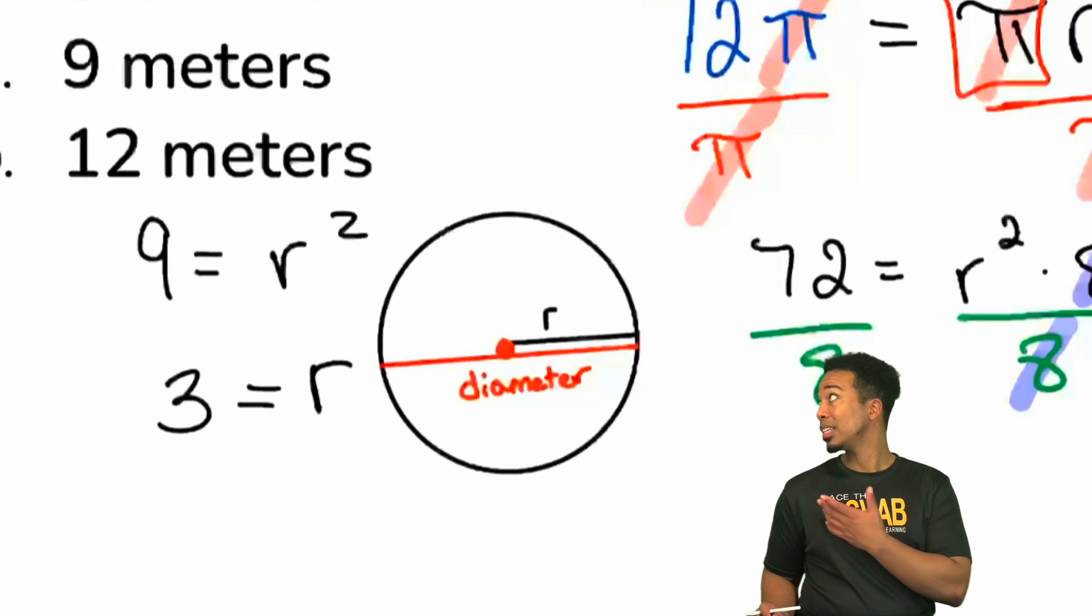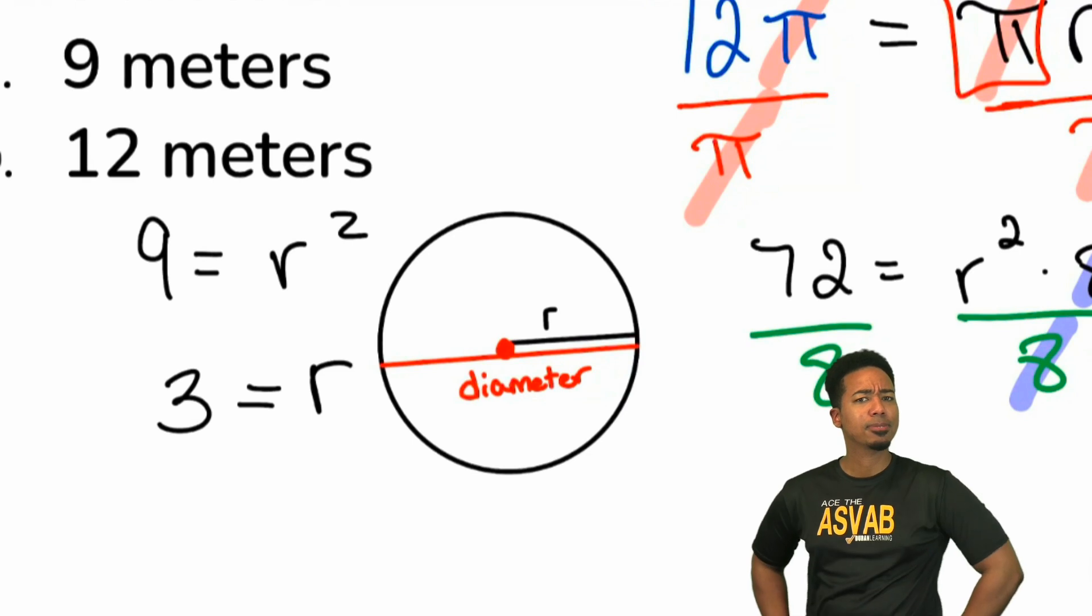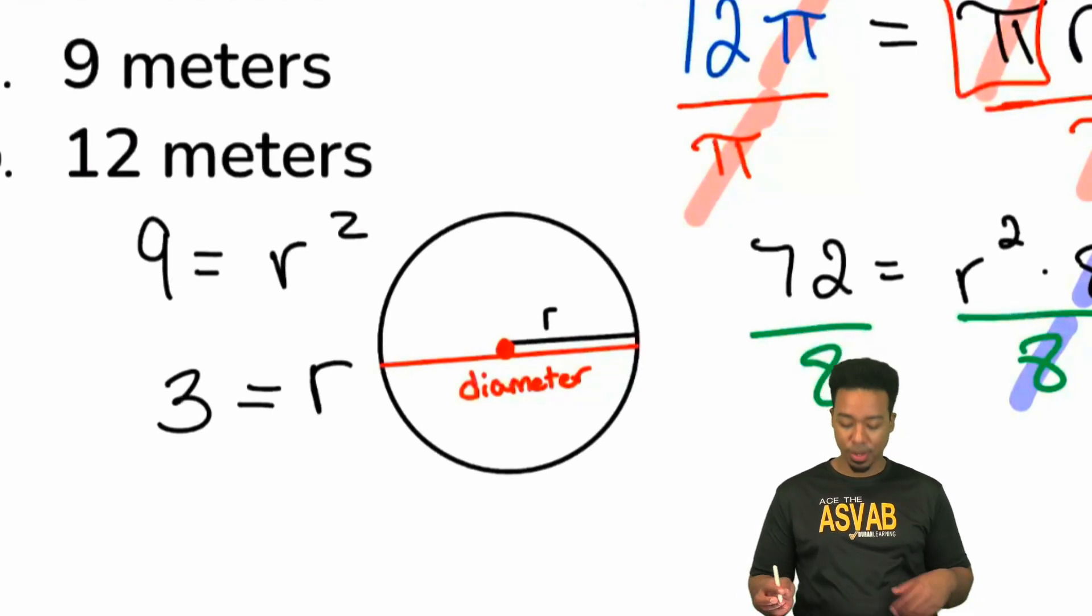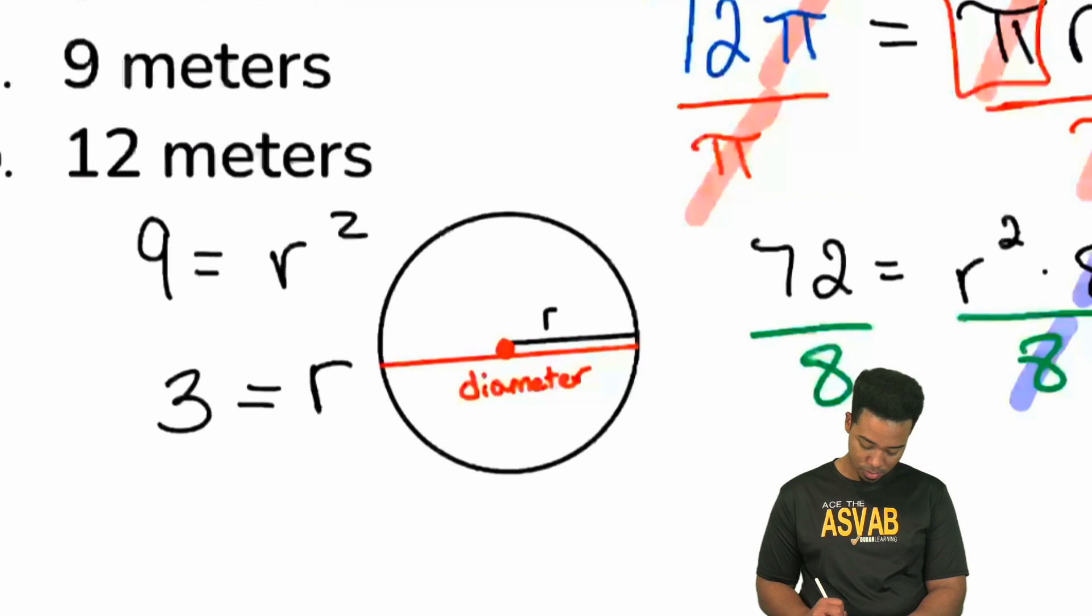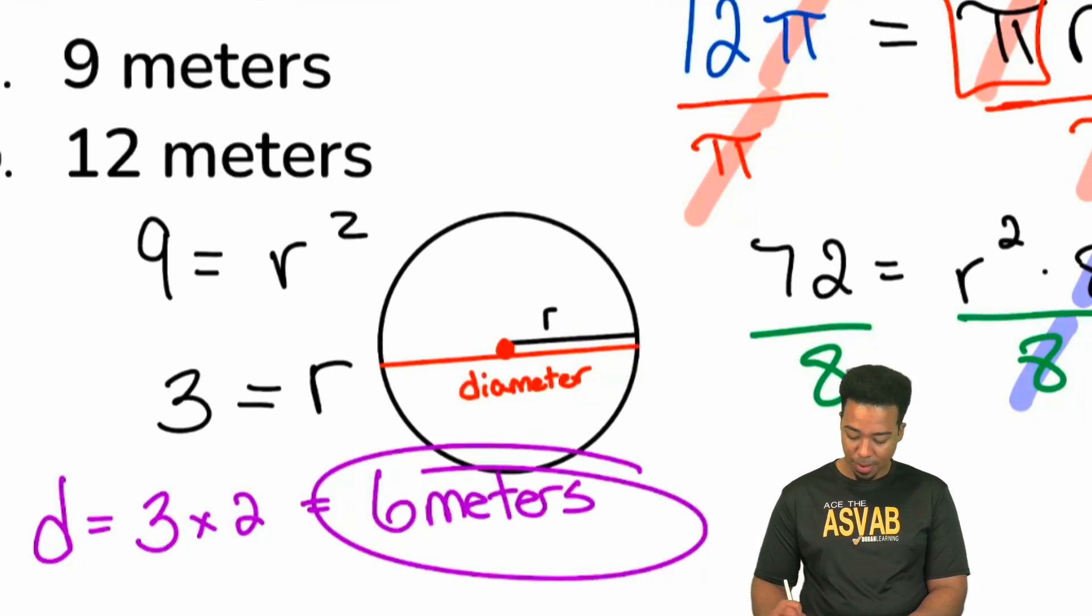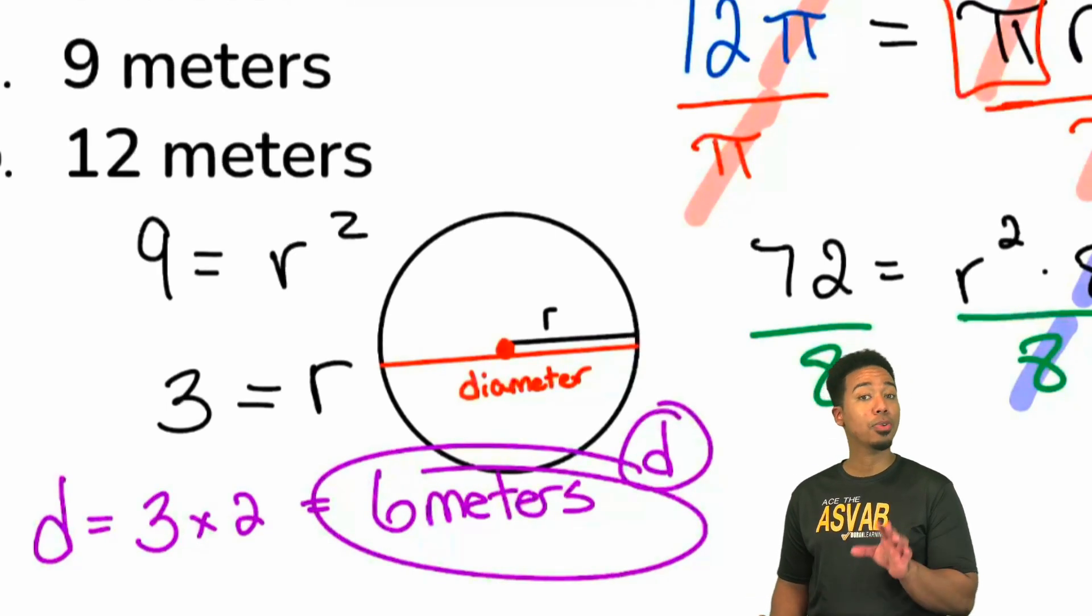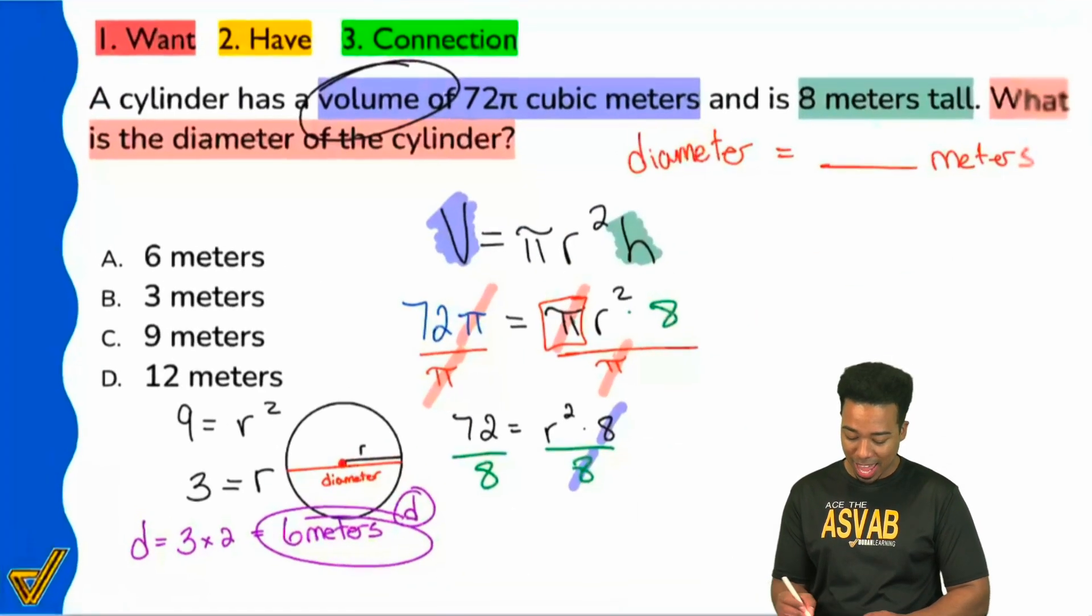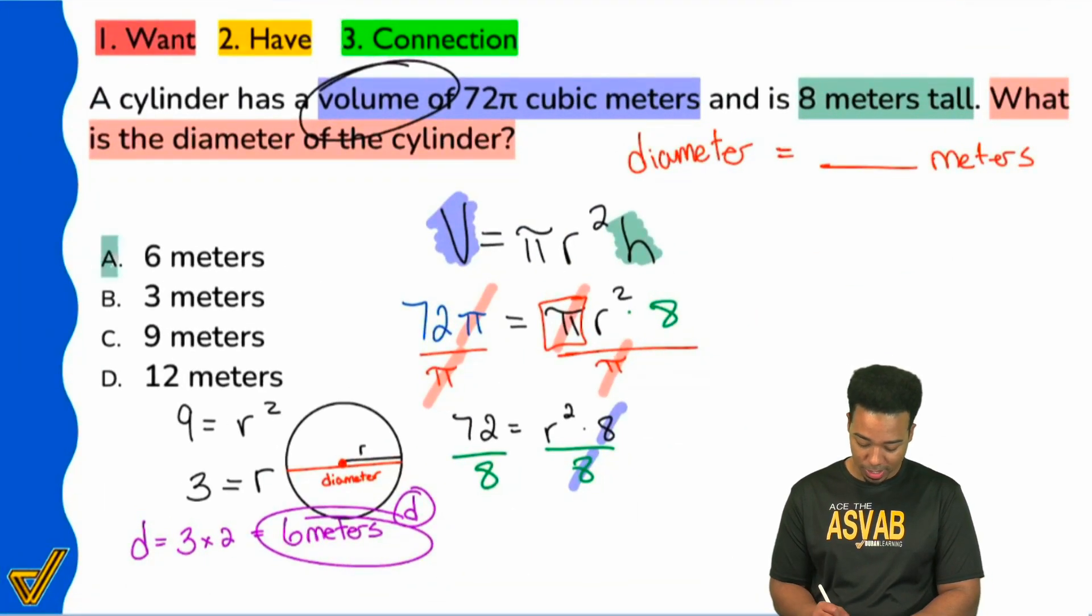So using that diagram, we have a radius of 3. What happens if we double the radius? What do we get? We get the diameter, for sure, but what's that number going to be? What do we get when we double 3? That's right, we get 6. So we have 6 meters. That is our diameter. Not 3, that's the radius. We double it to get to the diameter. And that's why A is the correct answer.